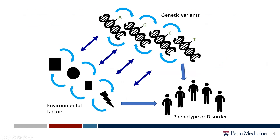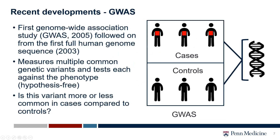Furthermore, it's not just genetic variants alone that cause a phenotype. There is no deterministic nature to complex disorders, unlike Mendelian diseases where if you have the variant, you have the phenotype. For complex disorders, it is often an interaction between multiple common variants with very small effects, interacting with environmental factors, that can then cause the phenotype or disorder. In order to identify genetic variants associated with a phenotype, we now use genome-wide association studies, or GWAS, the first of which happened relatively recently, in 2005.